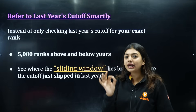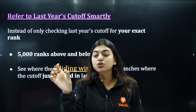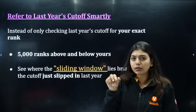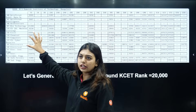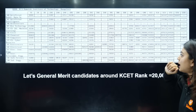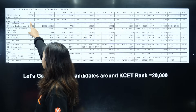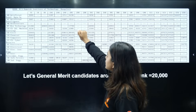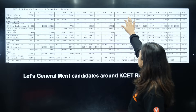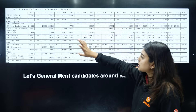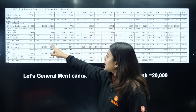See where the sliding window lies — branches where the cutoff just slipped last year. Check which category, whether general or Karnataka rural, and at what closing rank students settled. For example, looking at MS Ramaiah last year's cutoff: Artificial Intelligence closed at around rank 2,690 in category 1G; general merit AI closed at 2,455; Biotechnology went up to 21,000–40,000; Civil and Chemical went up to 54,000–67,000.